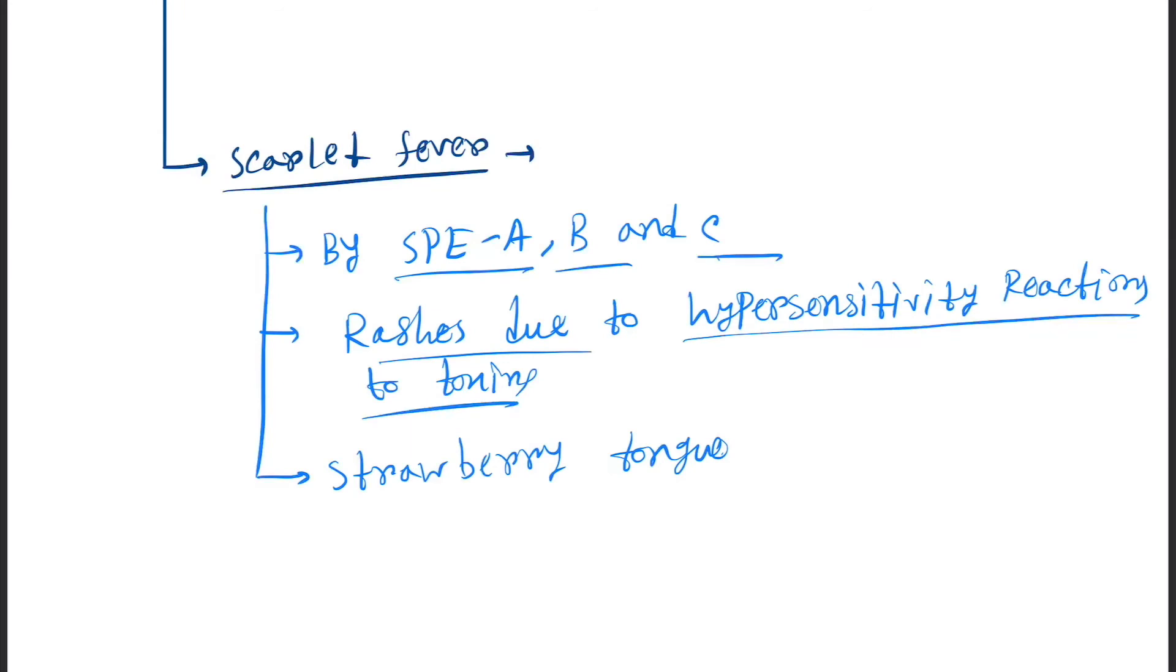Next is scarlet fever, produced by SPE A, B, and C. Rashes due to hypersensitivity reaction to toxins and strawberry tongue. These two are clinical symptoms and this is the pathogenesis.